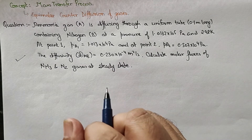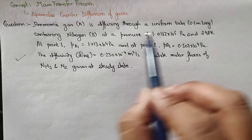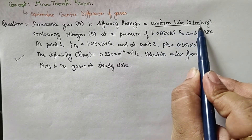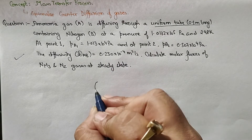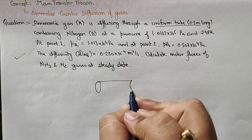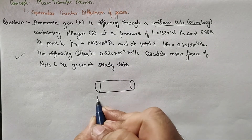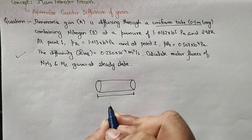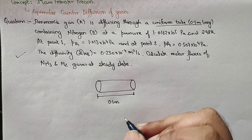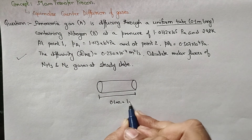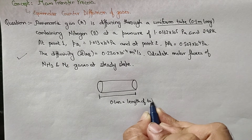Let's try to visualize a little bit. It says that there is a uniform tube of 0.1 meter length. Let's draw a uniform tube. The length of this tube is given as 0.1 meters.